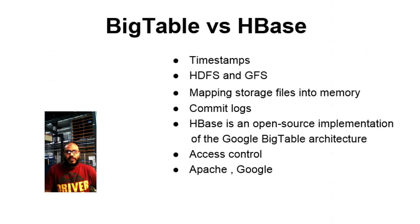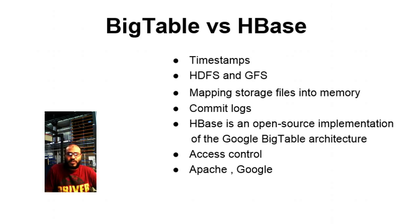Here we point out a few differences between Bigtable and HBase. HBase stores timestamps in milliseconds, whereas Bigtable uses microseconds. HBase works with Hadoop Distributed File System, while Bigtable relies on GFS, the Google File System. HBase can also run on other file systems. HBase cannot map storage files into memory, but Bigtable can. Bigtable has two commit slots and is able to select which one to use; in contrast, HBase has an option to skip the commit lock completely on writes for performance. HBase is an open-source implementation of the Google Bigtable architecture. Bigtable enforces access control at the column family level, whereas HBase does not. HBase is an Apache Software Foundation project, while Bigtable comes from Google.